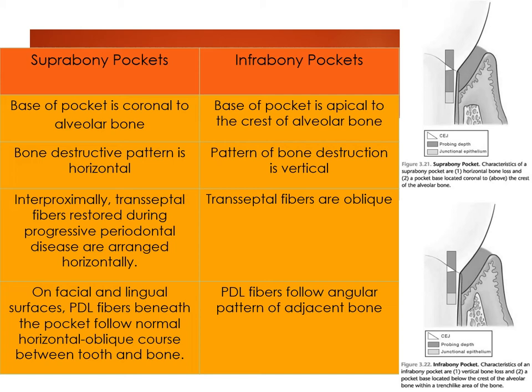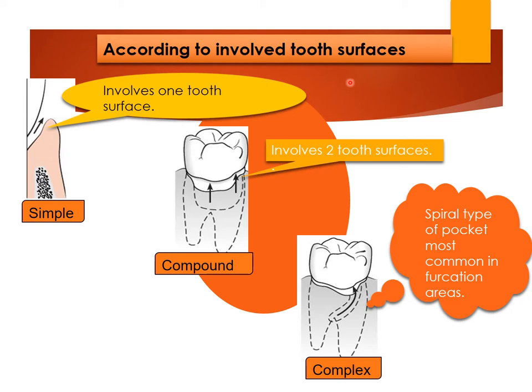Classification based on involved tooth surfaces: simple, compound, and complex. A simple pocket involves only one tooth surface — mesial, distal, buccal, or lingual. A compound pocket involves more than one surface; for example, both the buccal and mesial surfaces. A complex pocket is a spiral-type pocket that opens at one end and exits at the other end — that is why it is called a spiral-type pocket. It is mostly seen in the furcation area.